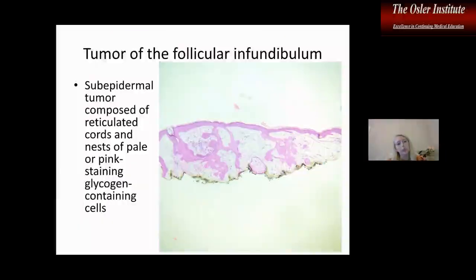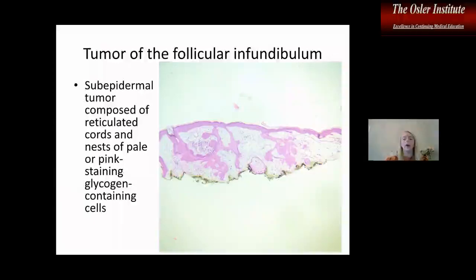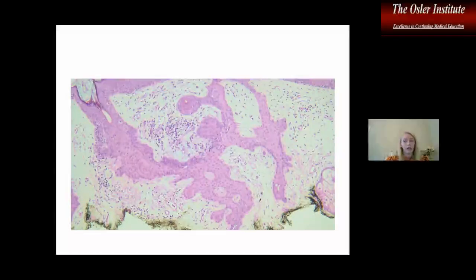This is the tumor of follicular infundibulum I had alluded to when I talked about fibroepithelioma of Pincus. Examples can look a little different — more or less extensive — but you can see how if it were more extensive you could think about fibroepithelioma of Pincus. The key is pink, pink, pink. Fibroepithelioma of Pincus has basaloid cells; these are very pink-looking cells that appear benign on higher power — very monotonous, no atypia, no pleomorphism, very pink.